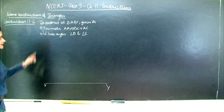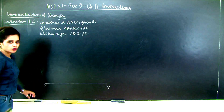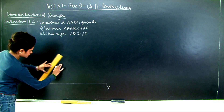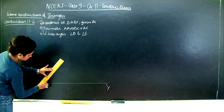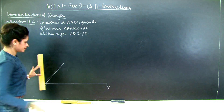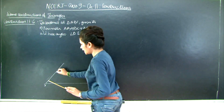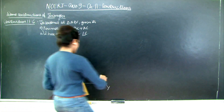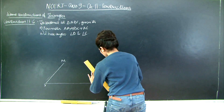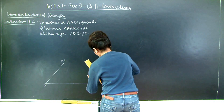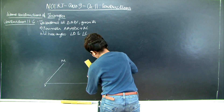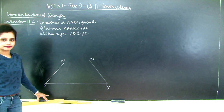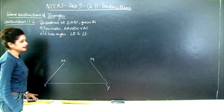I will draw the given angles B and C at points X and Y. So I am drawing angle MXY equal to angle B, and angle NYX equal to angle C. This angle is equal to angle B and this angle is equal to angle C.